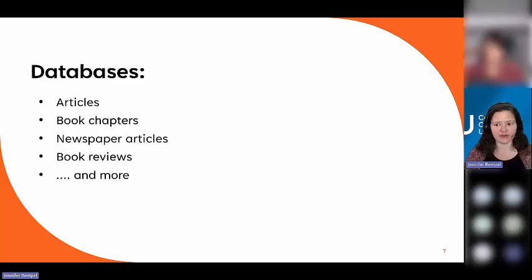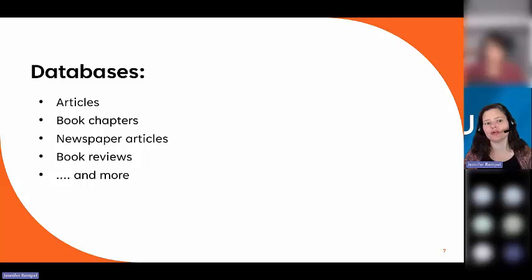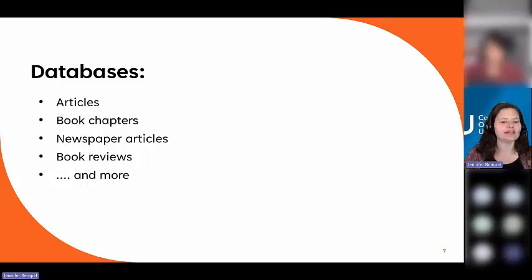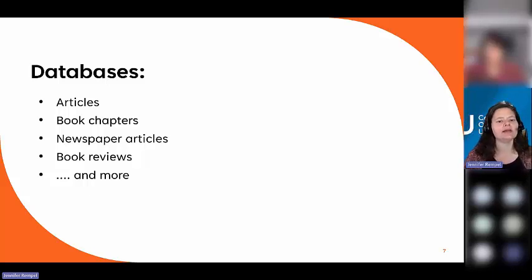In databases — a few of you had this correct — you can find articles, book chapters, things like newspaper articles, book reviews, and more. We'll get into the differences between the catalog and databases a bit more later on, but just have that in mind for now.